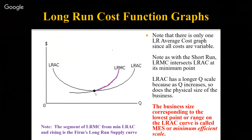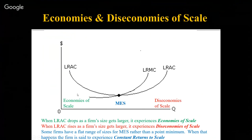When the firm's size gets bigger and the average total cost drops per unit of output, we say the firm experiences economies of scale. When the firm is getting larger, it may take advantage of economies of scale it couldn't before. You don't see assembly lines and automation in small businesses — they're too expensive. But in factories with assembly line robots that don't ask for coffee breaks or call in sick, large machine capital can be exploited much better because you're producing a lot more items.